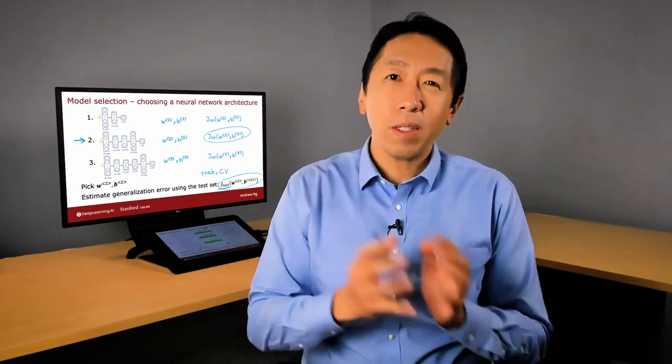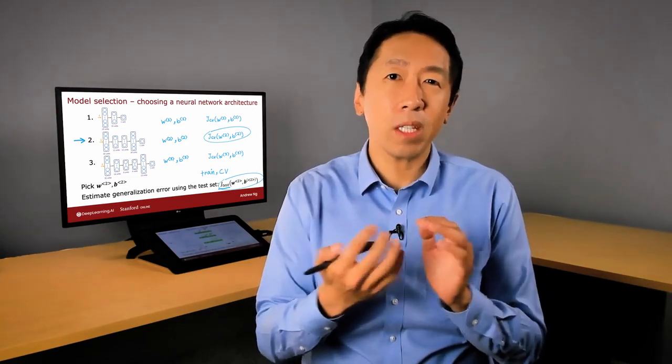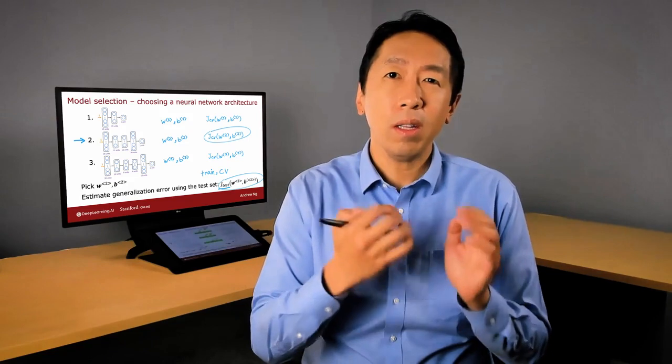I use this all the time to automatically choose what model to use for a given machine learning application. Now, earlier I mentioned running diagnostics to decide how to improve the performance of a learning algorithm. Now that you have a way to evaluate and automatically choose a model, the most powerful diagnostic I know of is called bias and variance. Let's take a look at what that means in the next video.